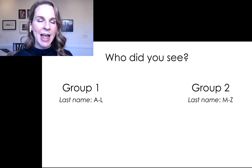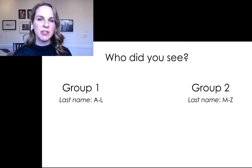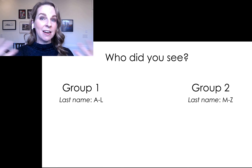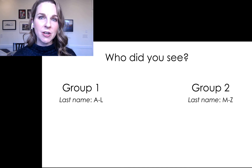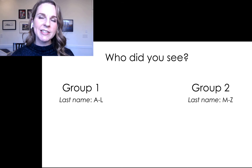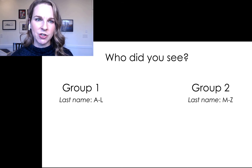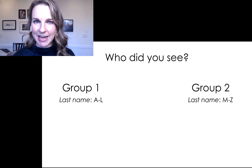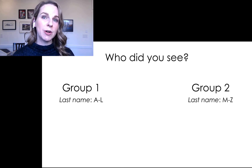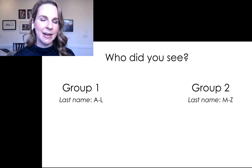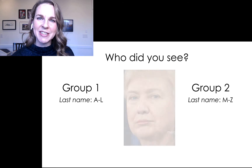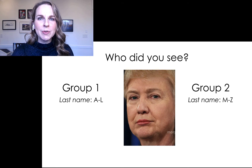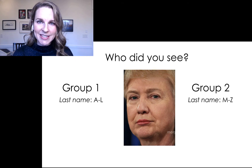Everyone's eyes can now come open. Group one, who did you see? You can type it in the chat — in a live class situation I would ask students to shout it out. I'm guessing that most of you in group one saw Donald Trump in that second image. What about group two? Who did you see? I'm guessing that most of you in group two saw Hillary Clinton. This is really quite puzzling because all of you — both groups — in fact saw the same face, and yet each group saw vastly different people in this image.